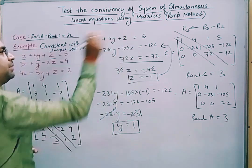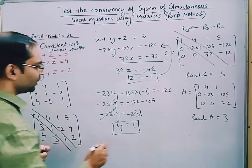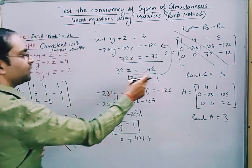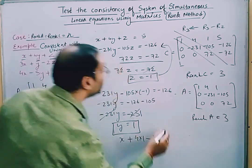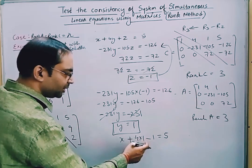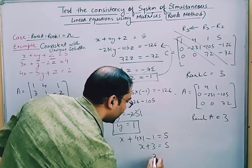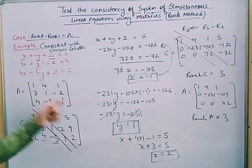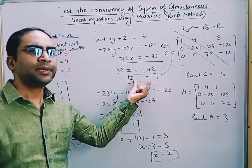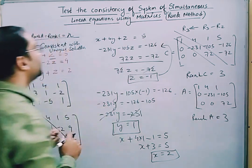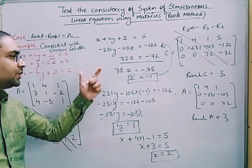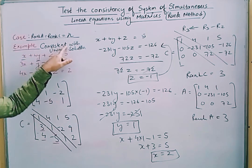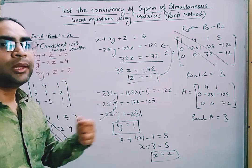Substituting y = 1 and z = −1 into equation 1: x + 4(1) + (−1) = 5, so x + 3 = 5, giving x = 2. The unique solution is x = 2, y = 1, z = −1. This is how we test the consistency of simultaneous linear equations using matrices and the rank method. In the next example, we will take case 2 where equations are consistent with many solutions.